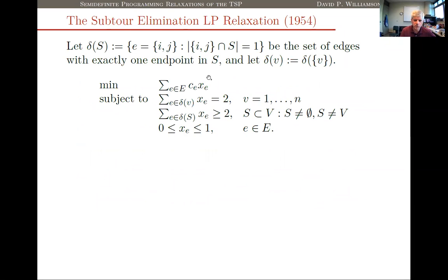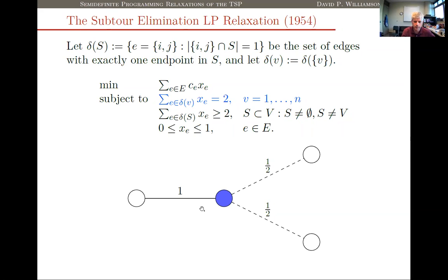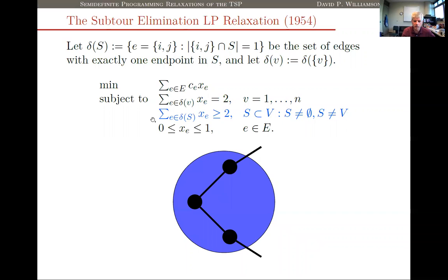The constraints considered by Dantzig, Fulkerson, and Johnson form this LP. The objective is to minimize the cost of edges in the tour. The first type of constraint is the degree constraint: for any particular city or vertex, the sum of all incident LP variables must equal exactly two, because any tour enters and leaves that vertex exactly once. The other set of constraints, added one by one, are the subtour elimination constraints. For any non-trivial set of vertices S, looking at all edges in δ(S) — edges with one endpoint inside S and one outside — that sum must be ≥ 2.